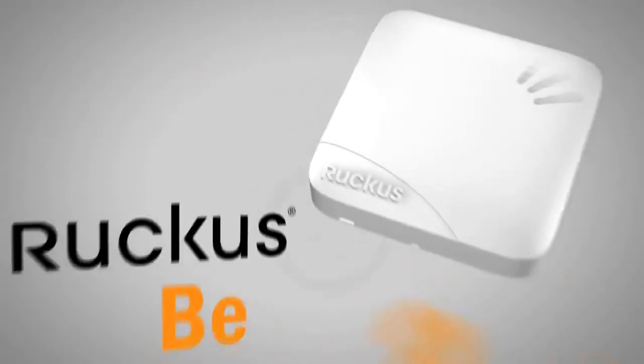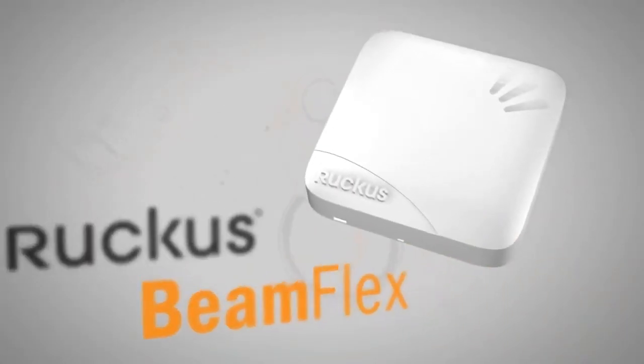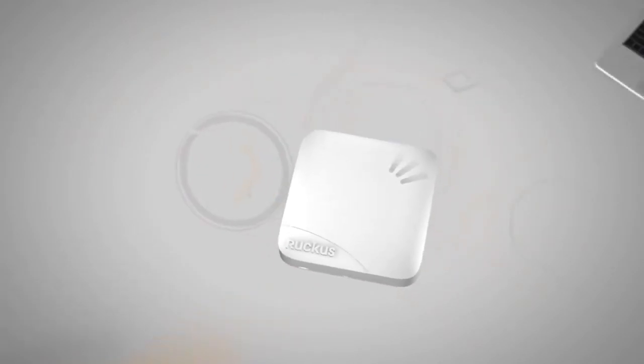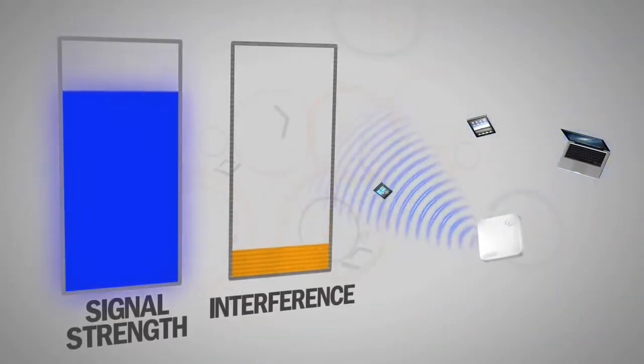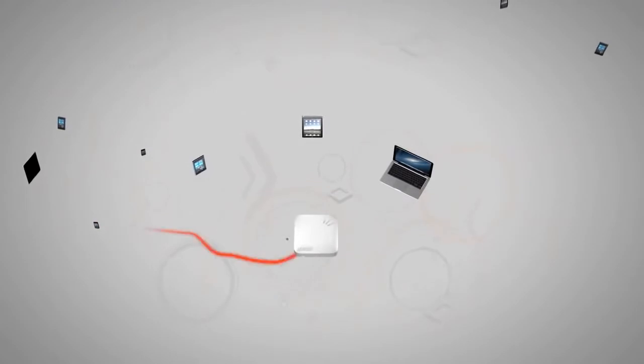Enter Ruckus BeamFlex. BeamFlex is the only adaptive Wi-Fi antenna technology that focuses and controls Wi-Fi signals. By increasing signal and decreasing interference, Wi-Fi performance is improved dramatically.